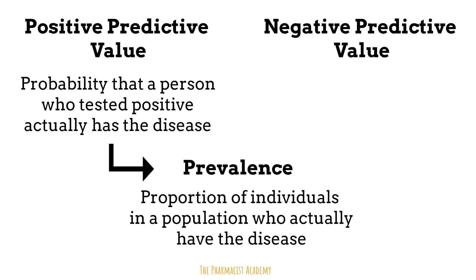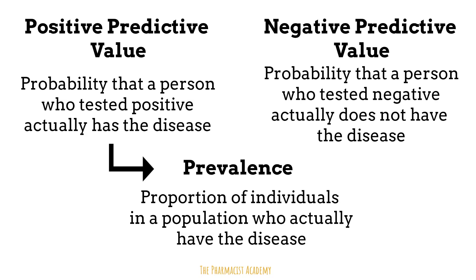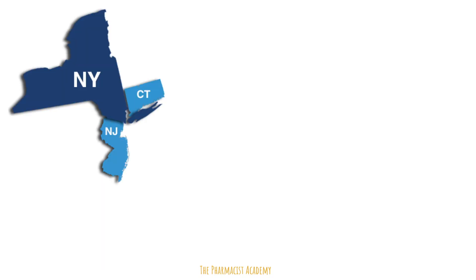The NPV of a test tells us the probability that a person who tested negative actually does not have the disease. This is also determined based on the prevalence of the disease. Let's assume we want to test for COVID using our new COVID test kits in these three states — New York, New Jersey, and Connecticut. Before our testing even begins, we check out the COVID prevalence in these three states.